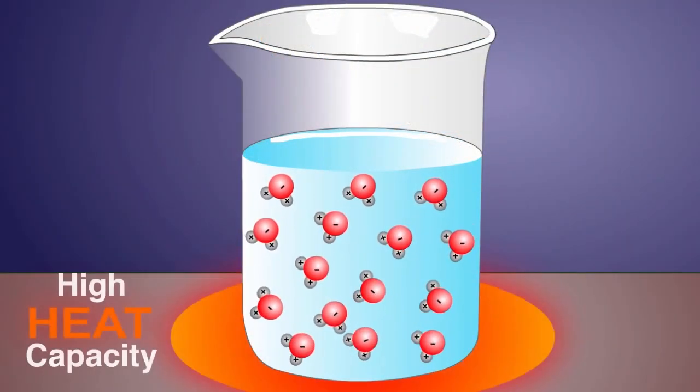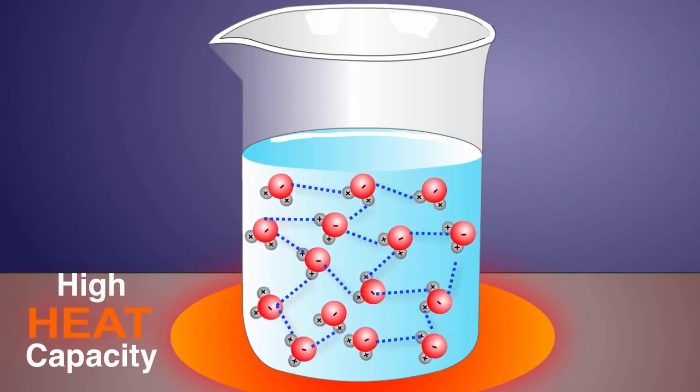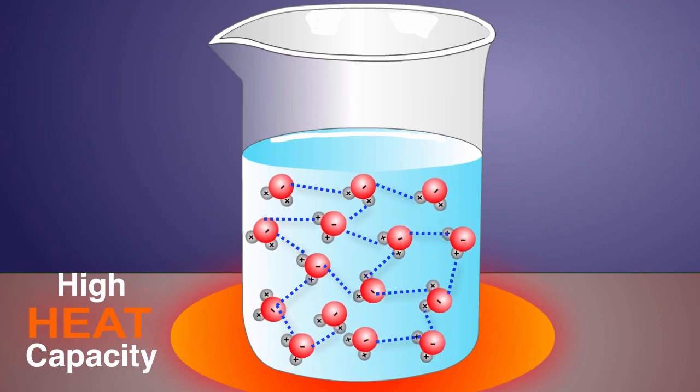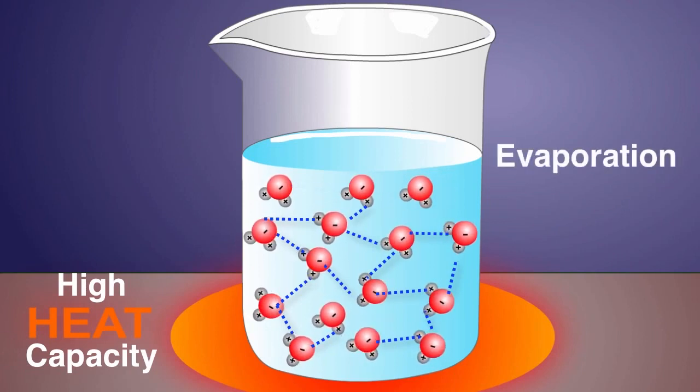Water has a high capacity for heat. What this means is that the many hydrogen bonds that link water molecules let water absorb a large amount of heat without changing its chemical state, for example, from liquid to gas.